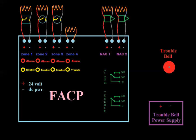So we have our trouble relay here, which right now is normally closed because nothing's in trouble. Let's say this wire gets cut. Well, what's going to happen? That zone's going to go into trouble, this trouble light lights up, and this relay is going to change states.